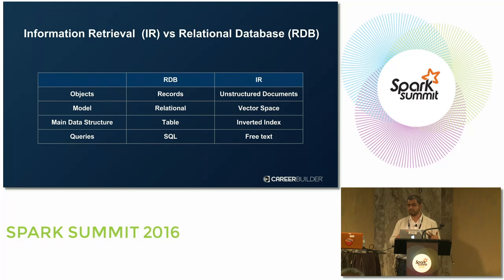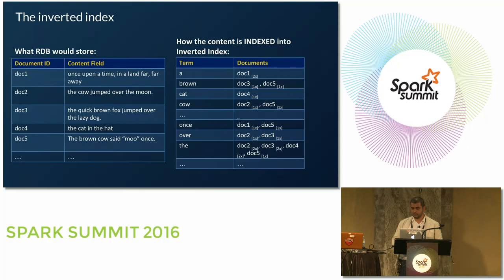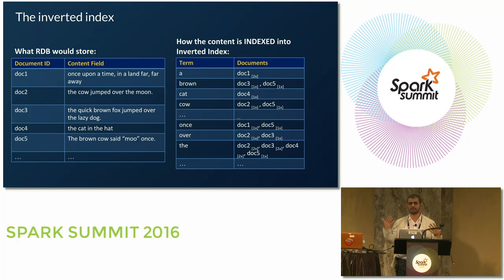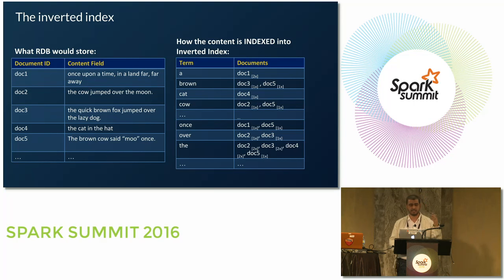I want you to look at the main data structure in both systems. The main data structure in RDB are tables — a table has rows and columns. But in an information retrieval system, the major data structure is an inverted index. If we have five documents with their content and we represent them using RDB, we'd have two columns: a column for document ID and a column for the textual content of each document. However, in the inverted index, the way we store the same data is the opposite.